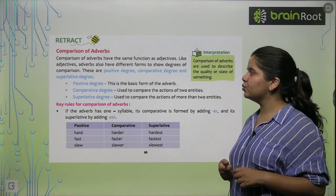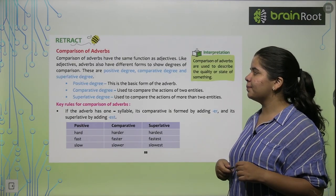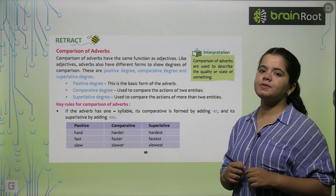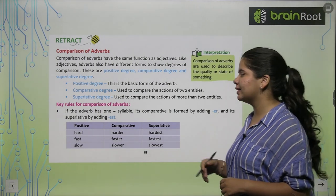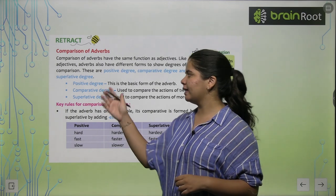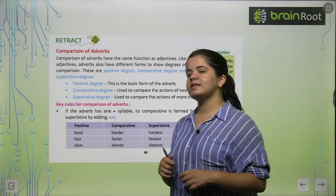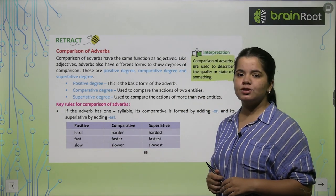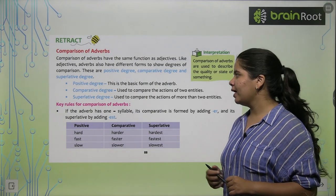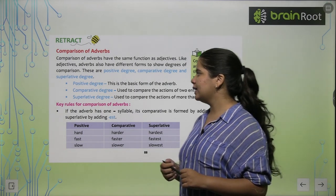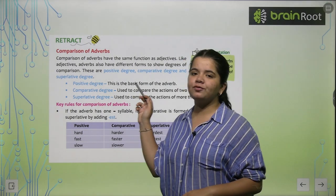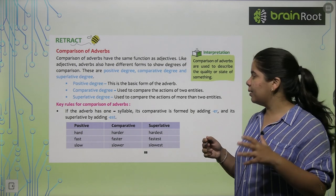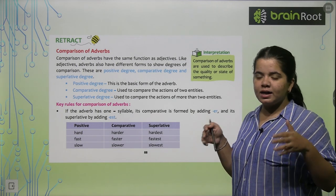Now we are going to move ahead with the comparison of adverbs. In comparison of adverbs, we have three degrees: first, positive degree — which is the basic form; second, comparative degree — when we compare two things; and third, superlative degree, which is the best.